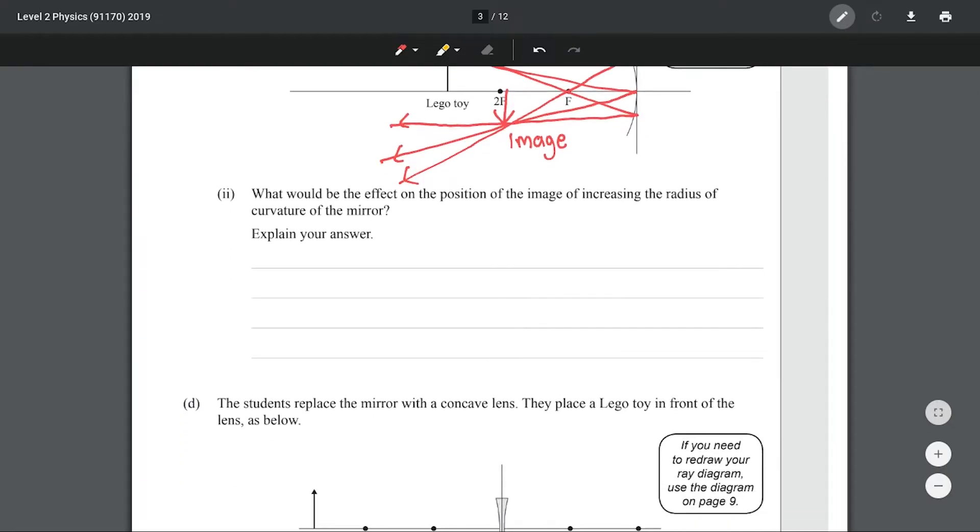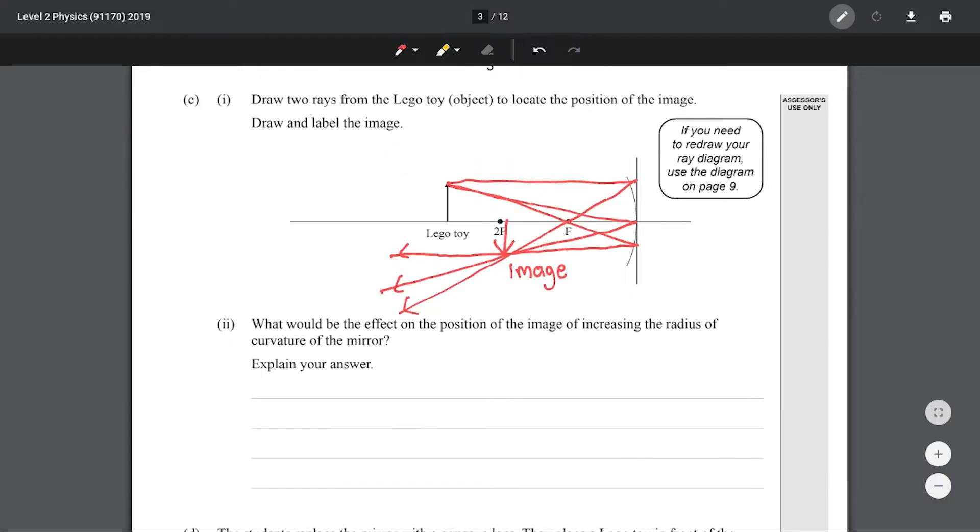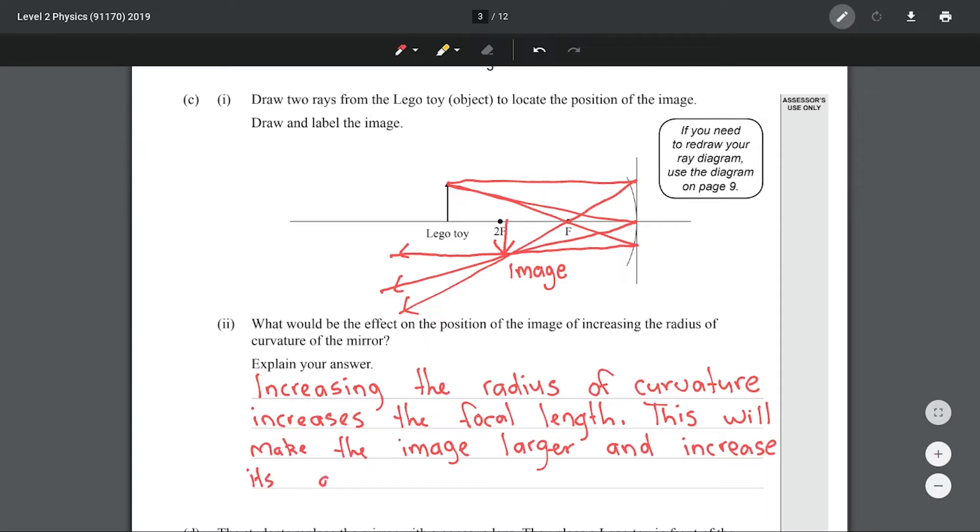What would be the effect on the position of the image of increasing the radius of curvature of the mirror? Increasing the curvature will increase the focal length. This will be the same as moving the object towards the mirror. The effect will be that the image will become larger and will also be further away from the mirror.